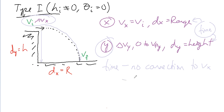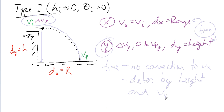Time is all determined by the height of the object and any V in the Y direction. It's the Y components that dictate the time. You're really just talking about falling — how long it takes to fall is controlled by gravity in the Y direction. Then you can use that time and connect it to X quantities.